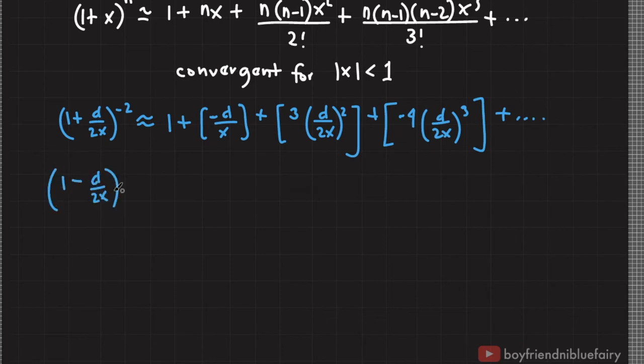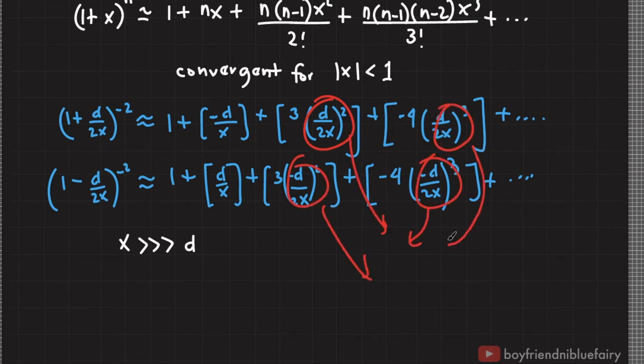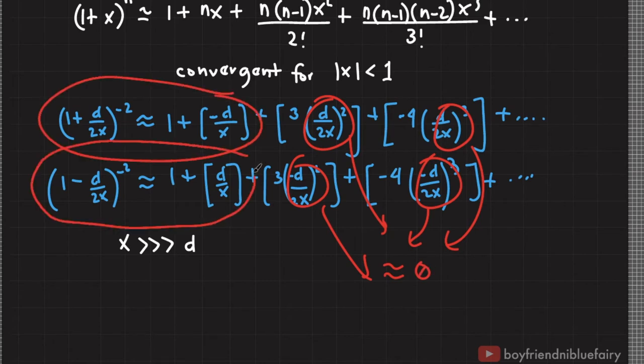Similarly, for 1 minus d over 2x quantity raised to negative 2, we have this expansion. Since we wish to find the electric field at points where x is way greater than d, then we can drop these terms off because they are approximately equal to 0 for x much greater than d. Let's plug these approximations to the electric field.